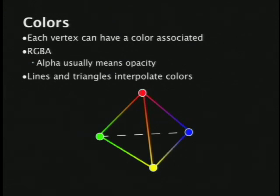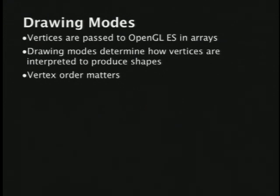You pass vertices to OpenGL and say draw me something — but it needs to know what those vertices mean. You need to tell it whether they're points, triangles, lines, and what kind of triangles. The first and simplest mode is GL_TRIANGLES — you give it an array of vertices and it interprets them as sets of three, where each set defines a triangle. Vertices 0,1,2 define triangle 0; vertices 3,4,5 define triangle 1.